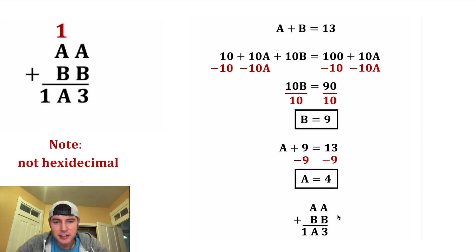Let's check our work. Let's change this AA into 44 and let's change this A down here into a 4, and then the BB we can change into 99. And we have 4 plus 9 is equal to 3, carry a 1, 1 plus 4 plus 9 is 14. So this checks out - so A does equal 4 and B does equal 9.